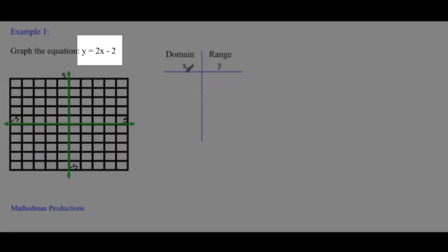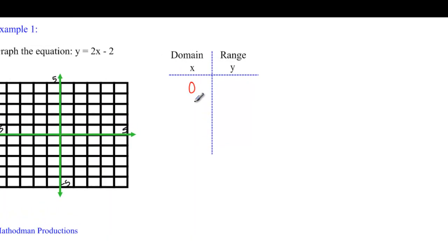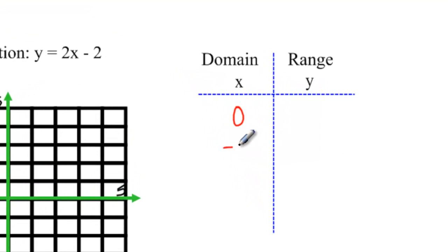As long as your equation is solved for y, it's pretty easy to graph. Domain just means your x values. You can choose any of your x values. It doesn't matter which you choose as long as they're pretty easy numbers to work with.